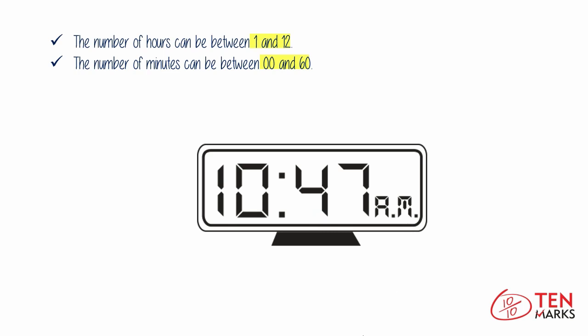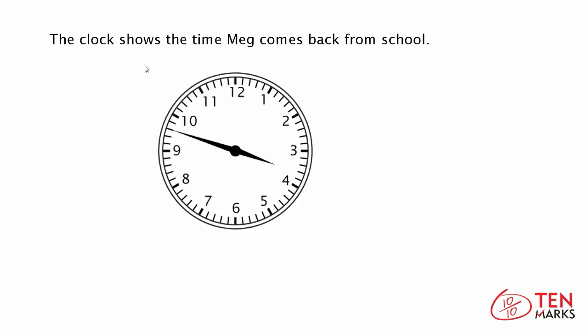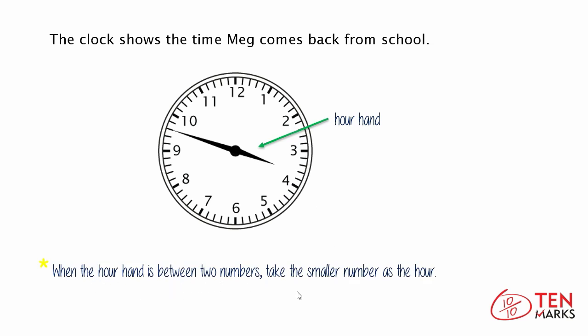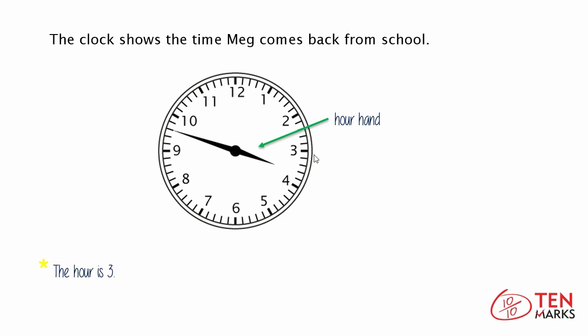Now that you know how to read a digital clock, let's move on to look at an analog clock. This clock shows the time Meg comes back from school. There is the hour hand, which is the shorter hand on the clock, and it tells you the hour. In Meg's clock, the hour hand is between three and four. When the hour hand is between two numbers, you take the smaller number as the hour — so the hour is three.